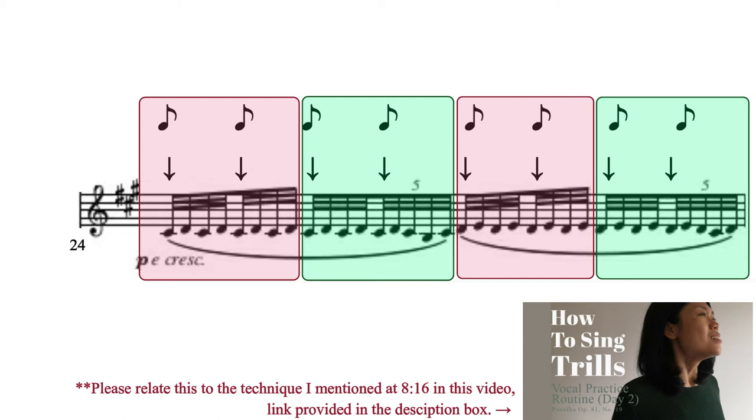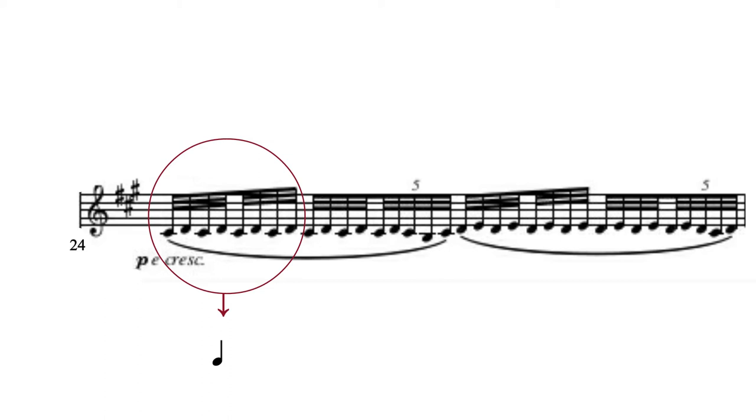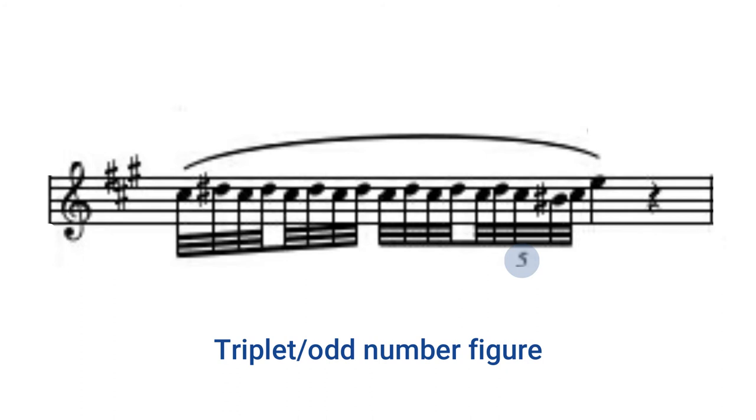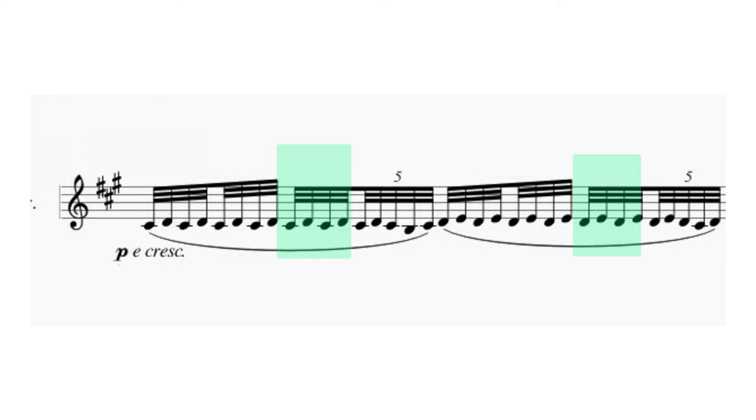Rhythmically wise, we have 8 demisemiquavers for the first beat and 4 demisemiquavers plus 5 demisemiquavers, a quintuplet. As I mentioned above, if our trill starts on the principal note, then we will have a triplet figure during the termination. So when we change from 4 demisemiquavers to 5 demisemiquavers, we have to prepare in our mind to change it. Otherwise, it will use up the time of the next beat. And for the termination, we have to sing clearly so that each note can be heard.